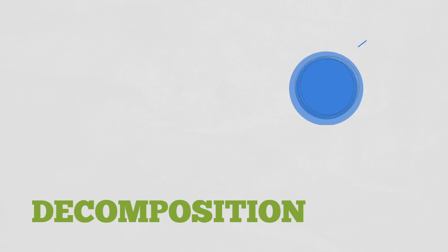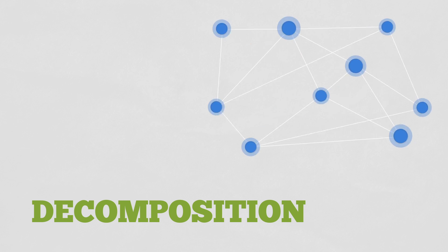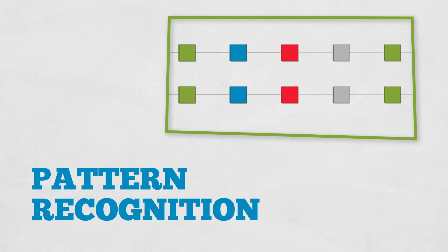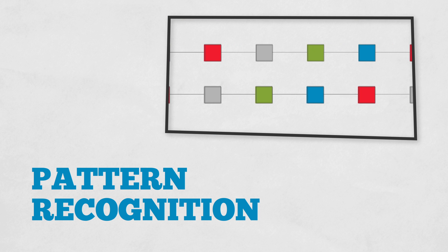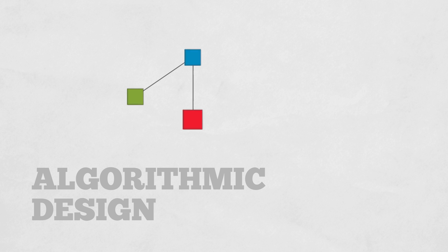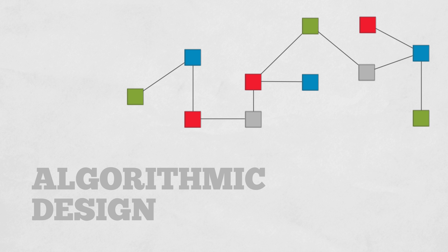Computational thinking is a set of problem-solving techniques that we use here at Google. One aspect of computational thinking is decomposition, where we take a large problem and break it down into smaller pieces. Another aspect is pattern recognition, which we use to help identify similarities and differences. The final part of computational thinking is algorithmic design, which allows us to create a step-by-step strategy for solving a problem.